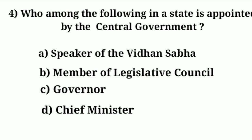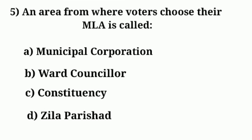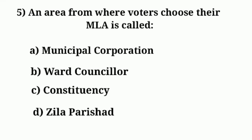The next question is the fifth question. An area from where voters choose their MLA is called — answer options: A — Municipal Corporation, B — Ward Counselor, C — Constituency, and D — Zilla Parishad. The answer option is C, Constituency.